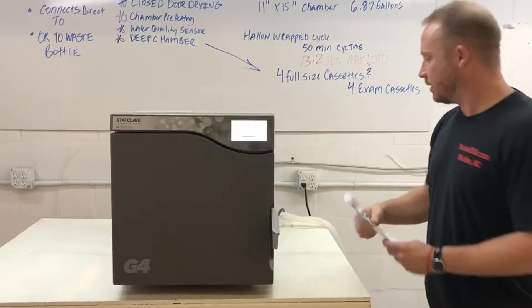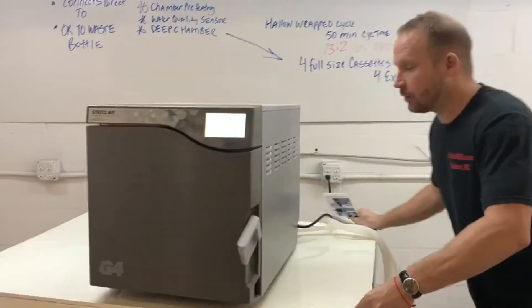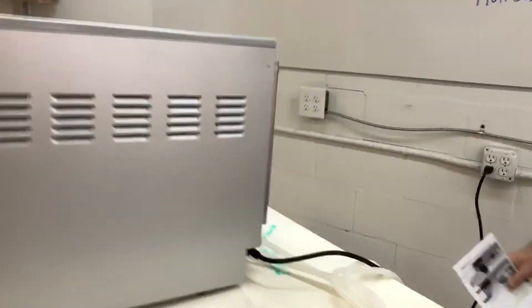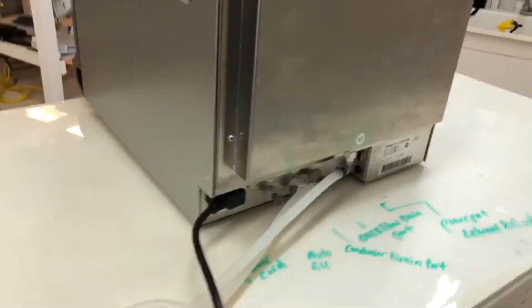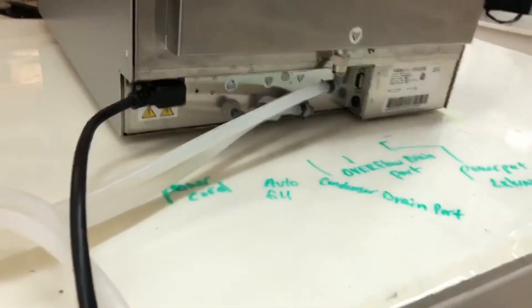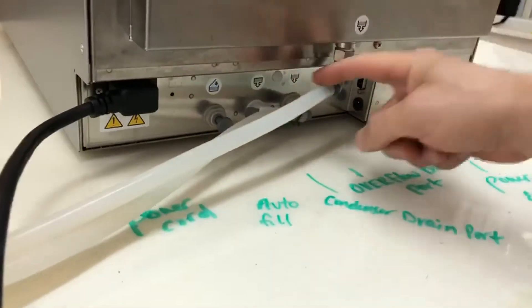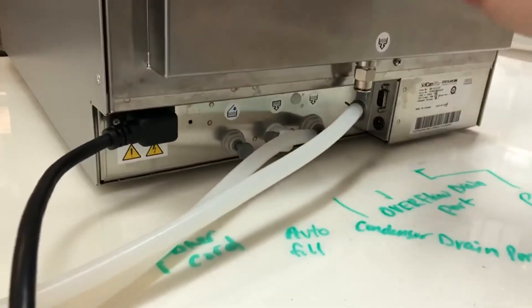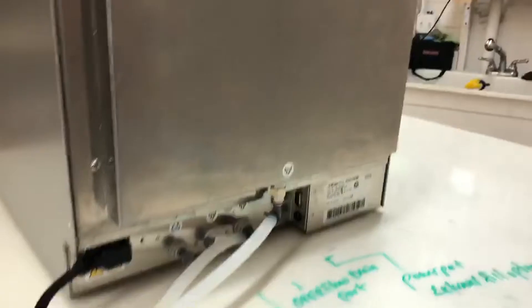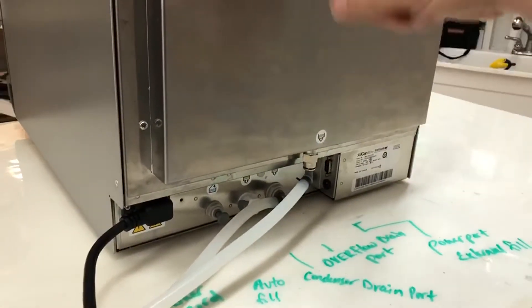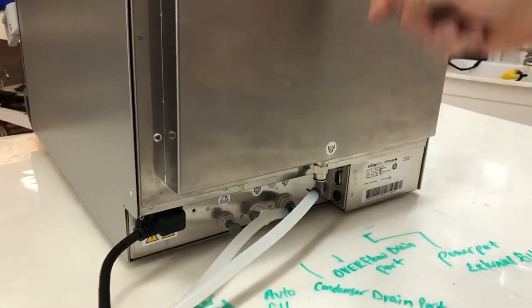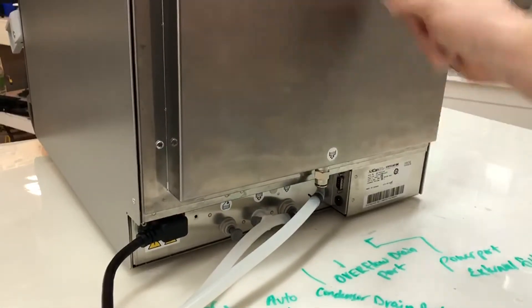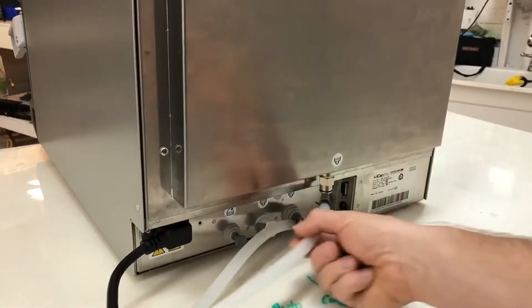Then we're gonna come to the back. You'll see there's multiple fittings. This is for the condenser waste bottle. Actually the condenser is inside of this instead of the extended waste bottle, which is like on the statum 2000, statum 5000. The coils are in here. So this is the condenser waste bottle out.